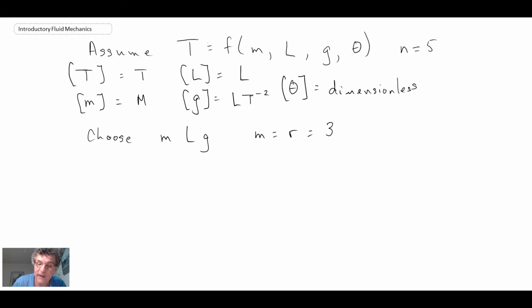And with that, we can expect to have N minus M or N minus R is equal to 2. We should have 2 pi groups coming out of this analysis. So let's begin with pi 1.